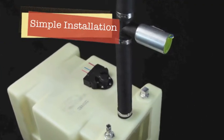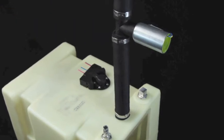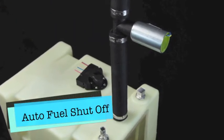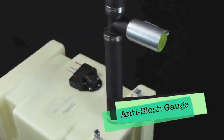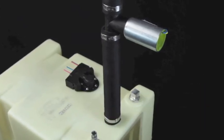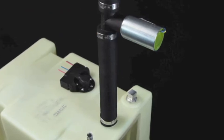Some of the basic characteristics of the EFS are of course simple installation, autofuel shutoff, anti-slosh gauge output for all gauge types, and of course it's cost-effective.